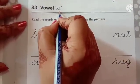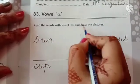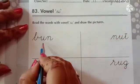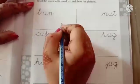Vowel U. Read the words with vowel U and draw the pictures. Here you draw the pictures. First read the word and draw pictures.